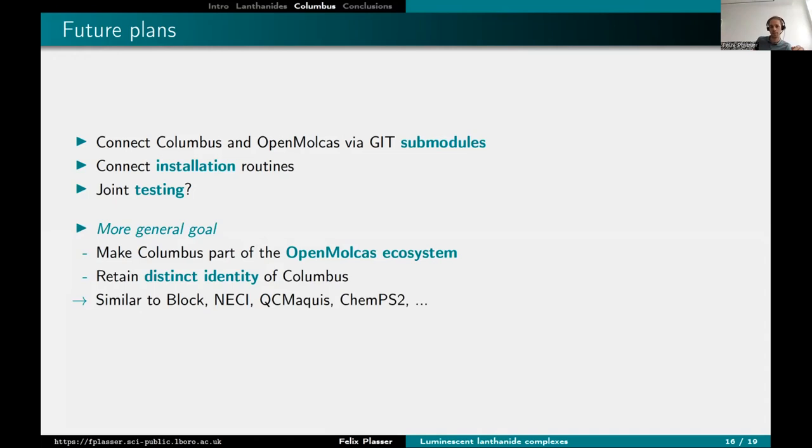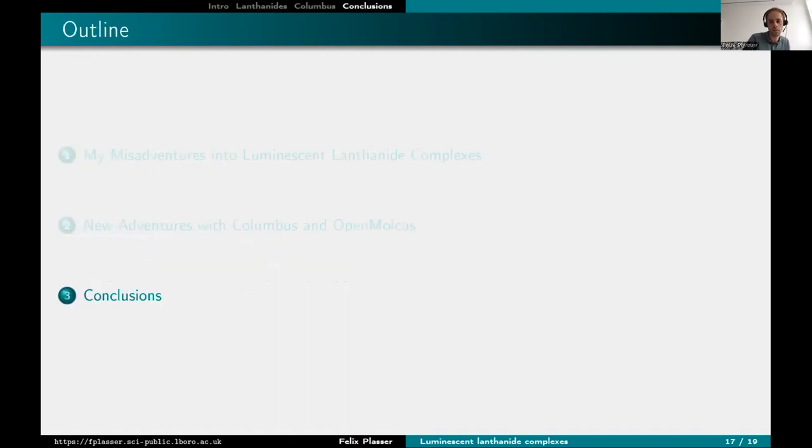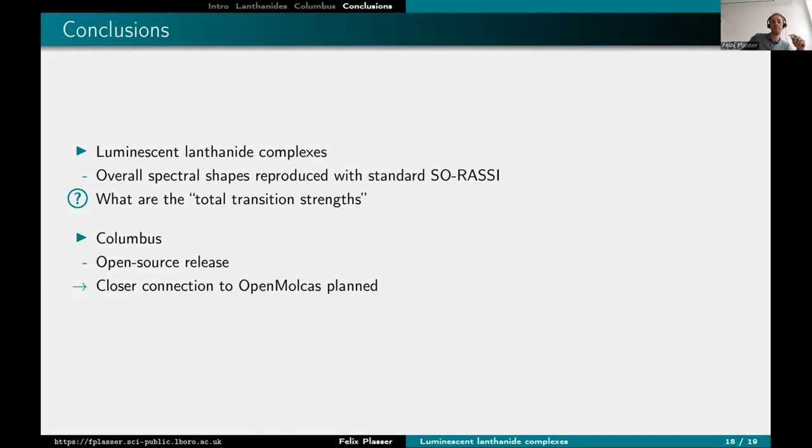The more general goal is Columbus should be part of the OpenMolcas ecosystem, but the feeling is that people want to retain the distinct identity of Columbus. But I think that would be similar to many of these other codes that are part of OpenMolcas, but still have the names like BLOCK or NECI or QCMaquis and so on. From my point of view, it would make sense to have it in a similar way that you can call Columbus from OpenMolcas. But on the other hand, Columbus still retains its identity as a standalone code. So, conclusions are, yeah, luminescent lanthanide complexes. It was nice to just use this brute force spin orbit RASSI. I can get the overall spectral shapes and the trends that I'm interested in. So the total transition strengths, I think I understand those by now.